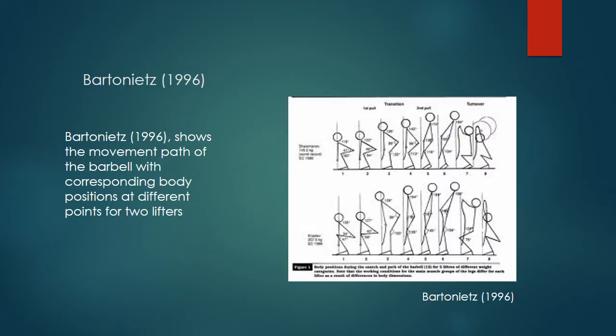An article by Barton Yetz shows the movement path of the barbell with corresponding body positions at different points in time for two lifters. For the first lifter, the knees and hips are flexed, ankles are plantar flexed, feet are in complete contact with the floor, and the trunk is held constant to make the force transition effective.